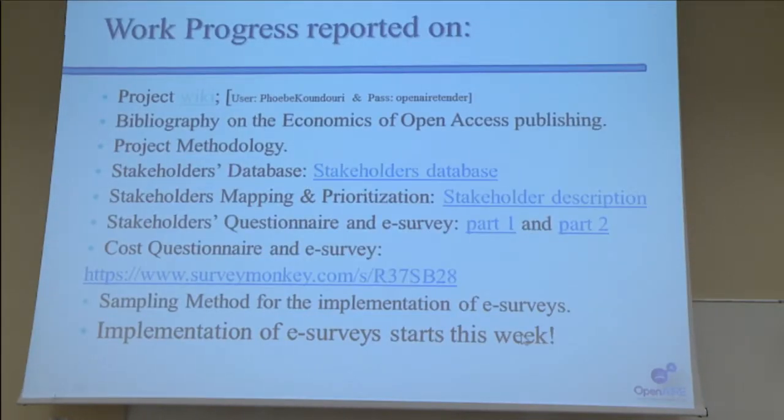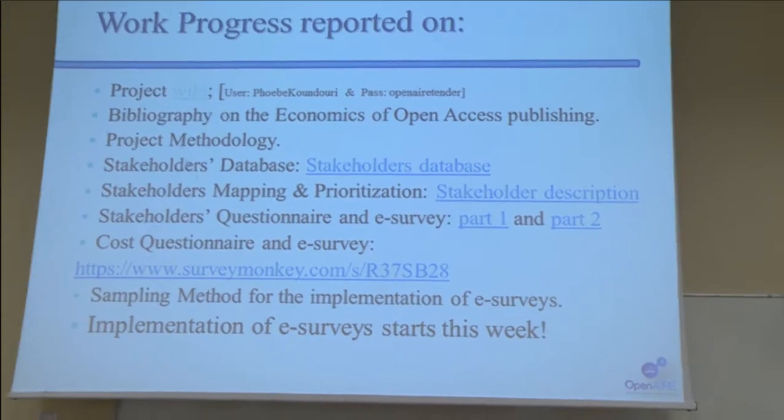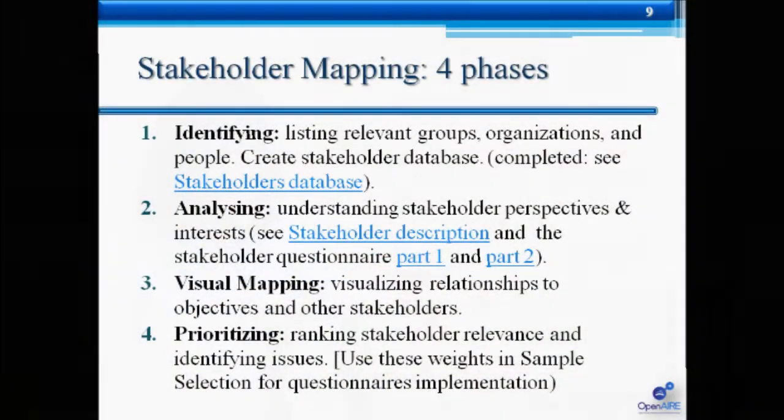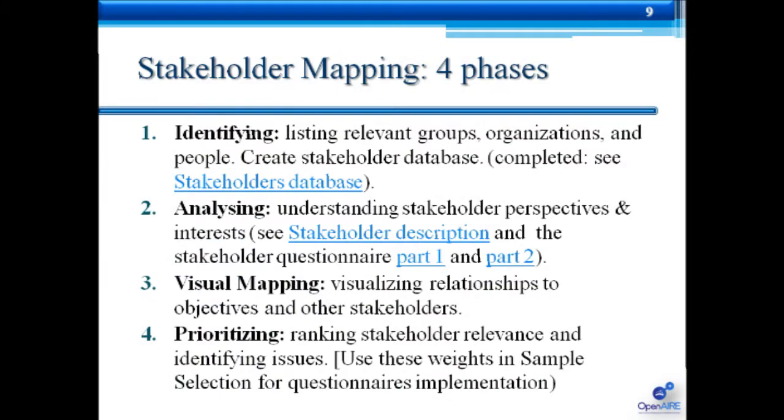Moreover, the stakeholders' database is important because here we have scientists and researchers, research funds, research centers, publishers, scholarly societies, and so on — we have 15 different groups of stakeholders. You can actually go there and suggest revisions or additions.